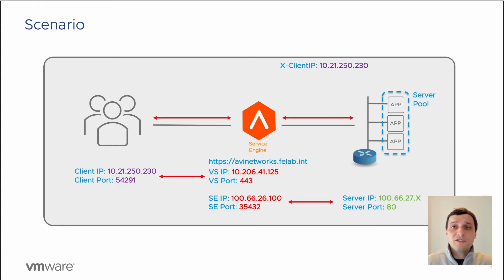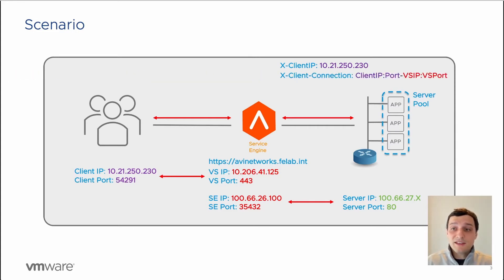Our back-end servers want more information — they want the full picture of what that client is connecting to, which includes the virtual service IP as well as the virtual service port. So they want a new header called xclientconnection that will have the client IP and port information for the source, and then the destination info of virtual service IP and virtual service port. We need to build some customization to get this to work.